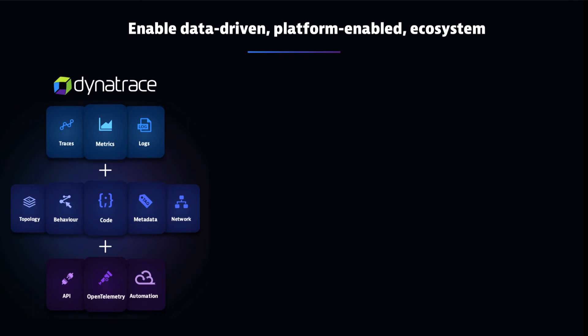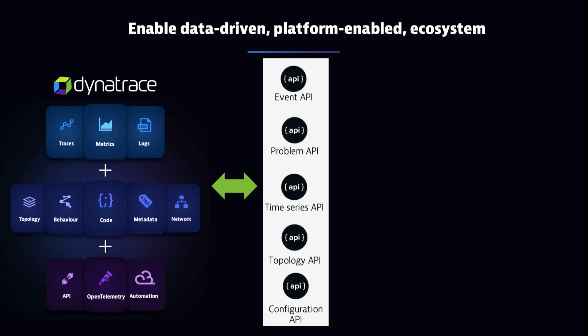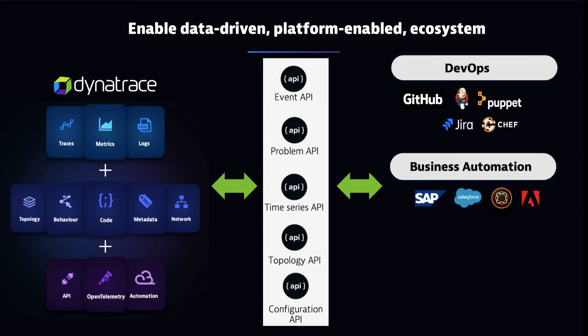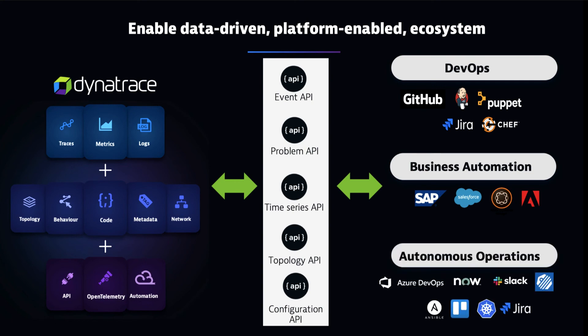What we're doing is taking Dynatrace data — not just the typical three pillars of observability (traces, logs, and metrics), but also topology, code-level insights, metadata, and behavior, plus ingestion of other data — to give a complete view of your system. By exposing all of this through a rich set of APIs, we integrate into your DevOps tooling. As pipelines execute, we do monitoring as code, validate deployments through the environment, tie behaviors into business automation tools for prioritization, and drive things into workflow management for incident management, change management, and ultimately automatic runbooks.